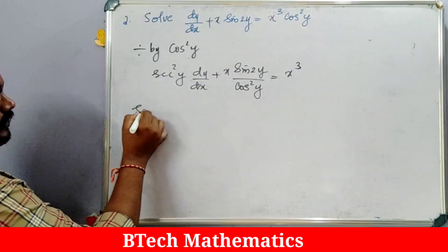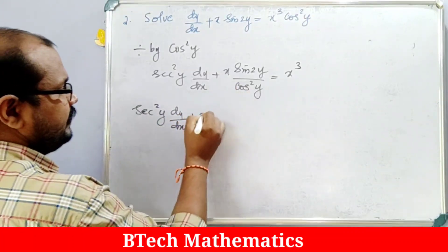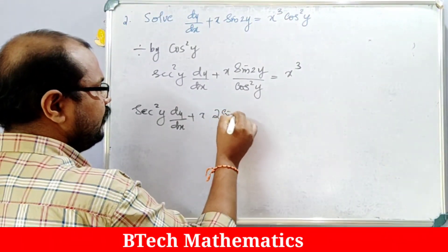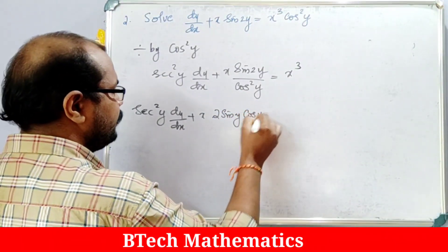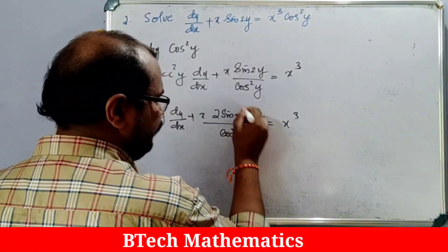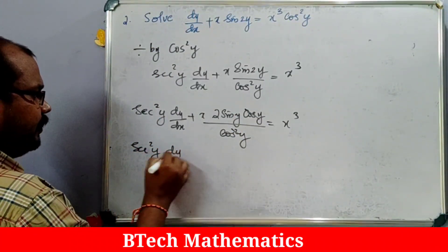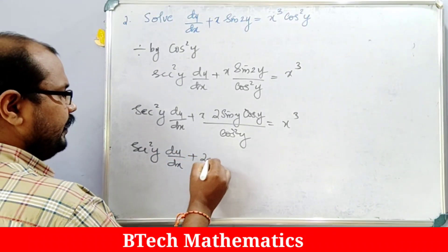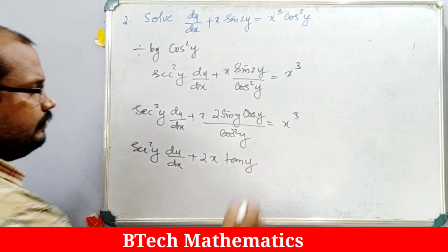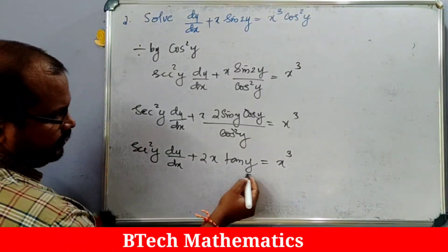We can write this as: sec²y·(dy/dx) + x·sin2y/cos²y = x³. Using the identity sin2y = 2siny·cosy, the term sin2y/cos²y = 2siny·cosy/cos²y = 2tany·secy... giving us sec²y·(dy/dx) + 2x·tany = x³.